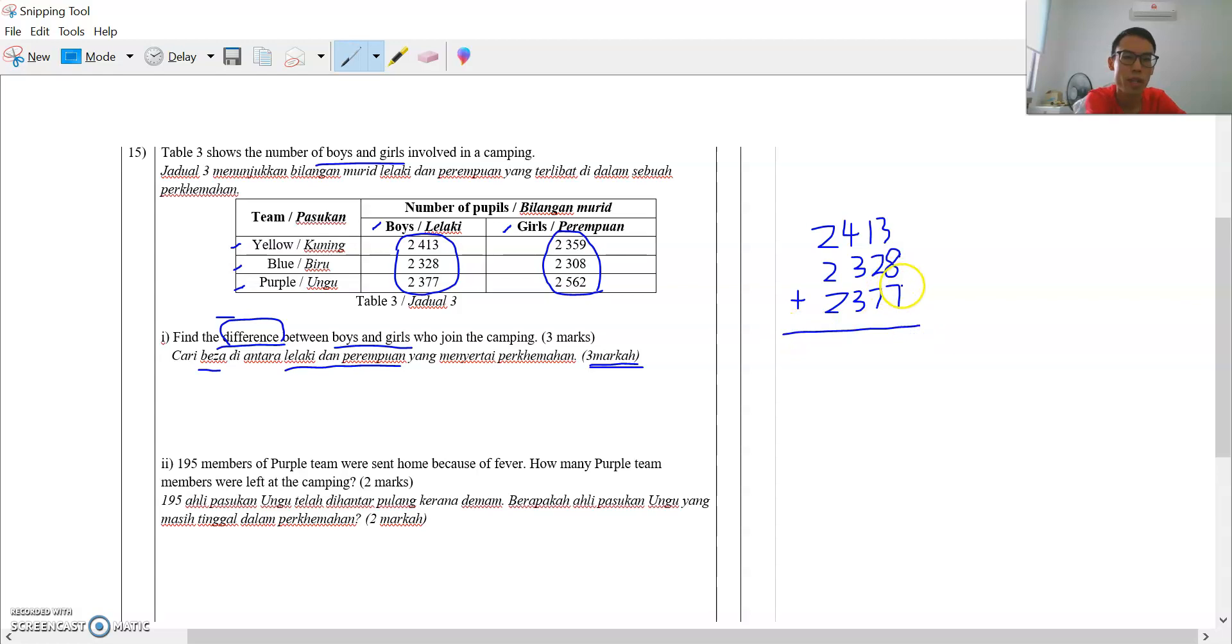So you add up: 7 plus 3 is 10, 10 plus 8 is 18. 7 plus 2, 9. 9 plus 1, 10. 10 plus 1, 11. 1 plus 4, 5. 5 plus 3, 8. 8 plus 3, 11.